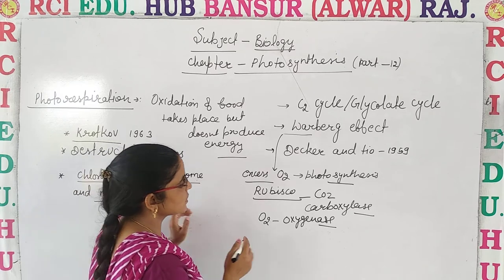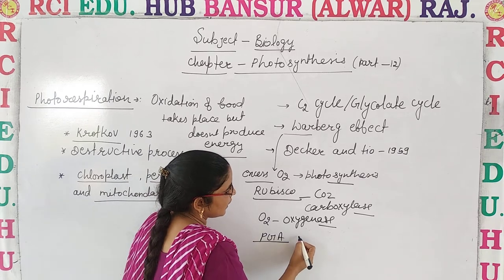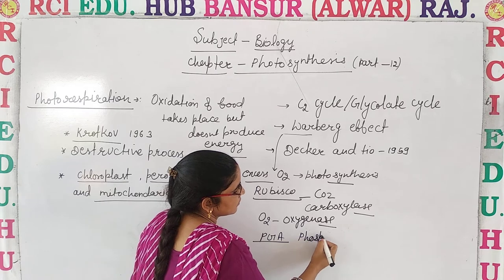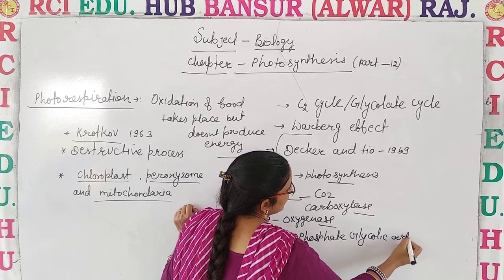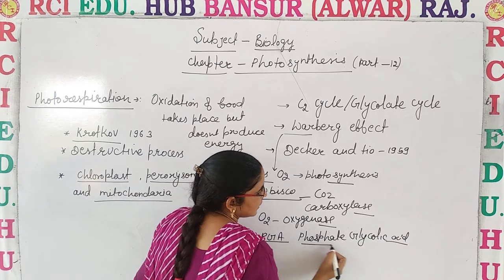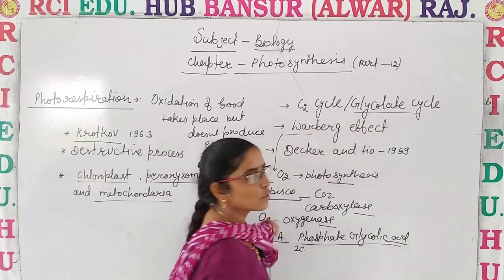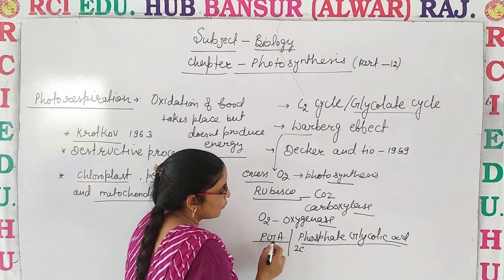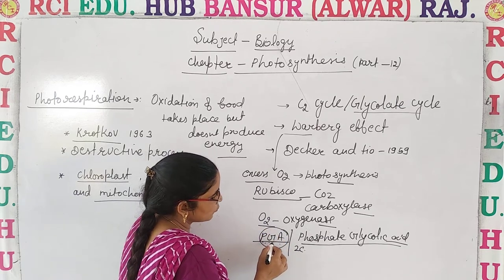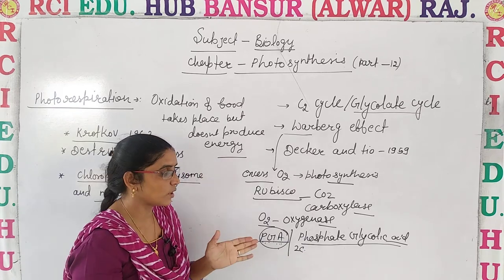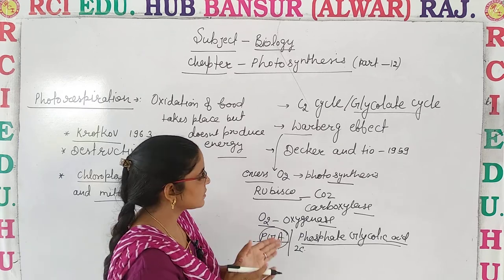So what happens in this process? When there is excess of oxygen, instead of PGA being formed, what is produced? Phosphate glycolate is formed — also called phosphate glycolic acid. This is a 2-carbon compound. So PG formation occurs, and hence CO2 assimilation is reduced.